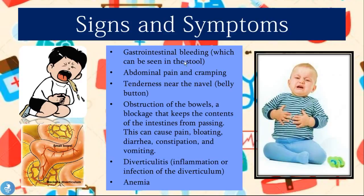Food normally passes through the hollow lumen of the small bowel, but when food gets into the diverticulum it tends to remain there and rot, creating a perfect environment for infection. Patients may also experience bleeding because this is an abnormal weak point in the small bowel, along with pain and tenderness. Due to that chronic bleeding, patients may develop anemia from the continuous loss of small amounts of blood.